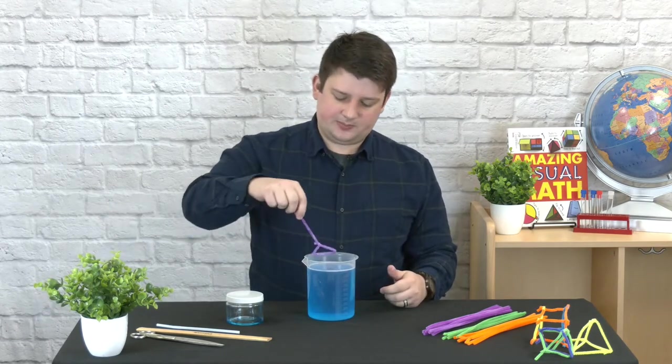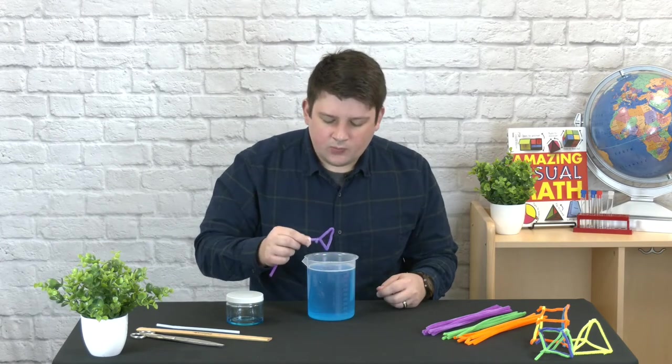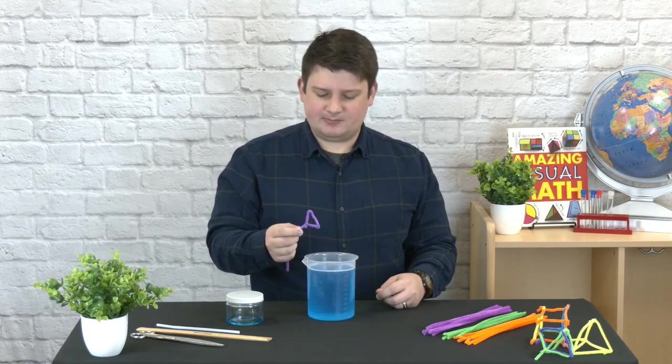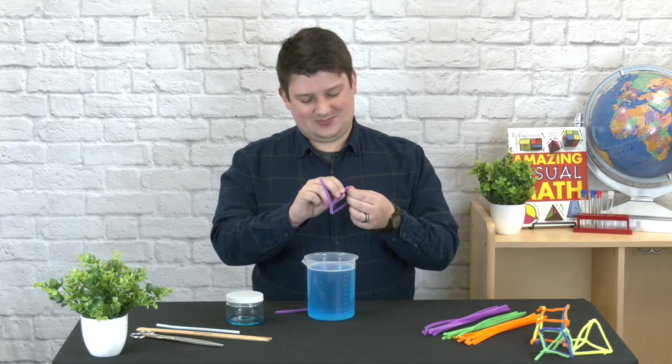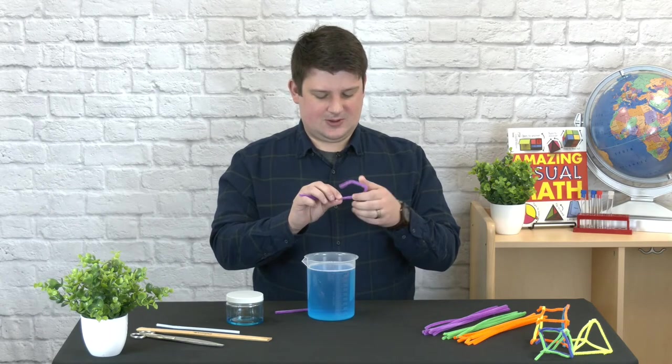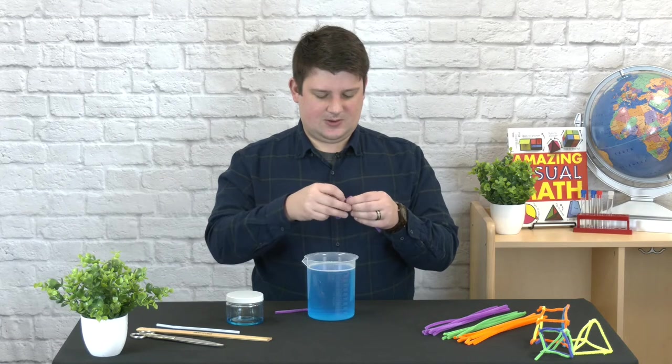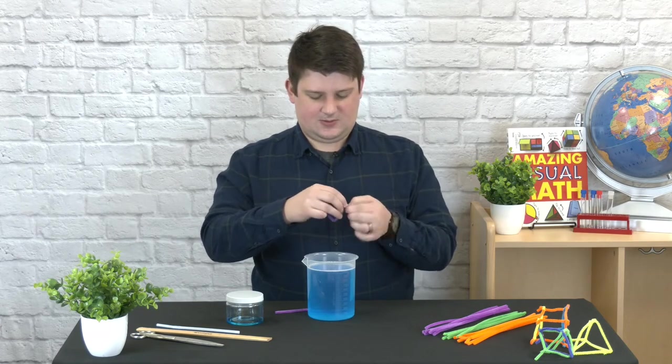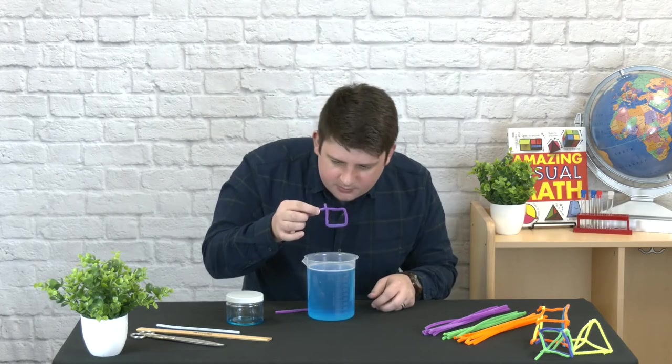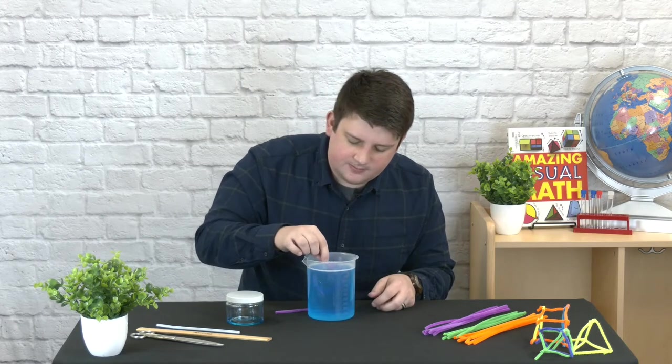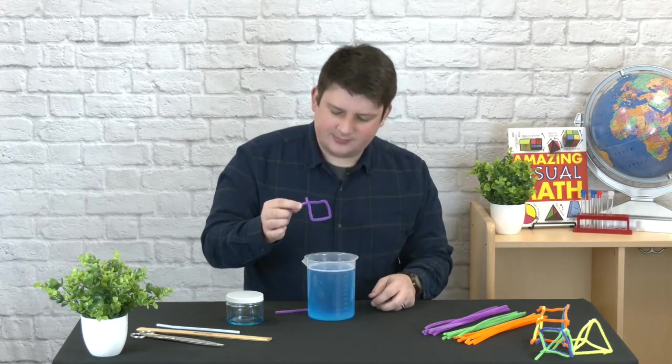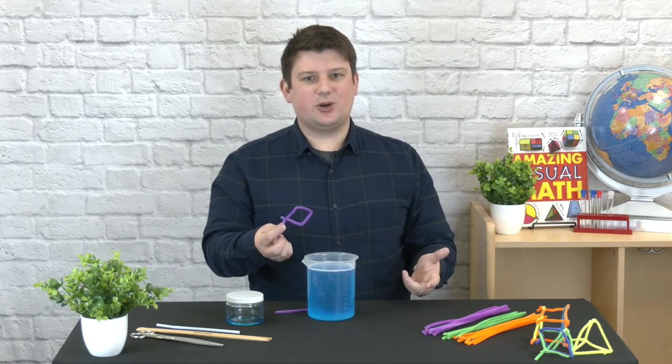Let's see if it makes a triangular bubble. It came out spherical again. Let's try to make a square bubble. All right, we've got a square one now. So our square bubble wand also makes spherical bubbles.